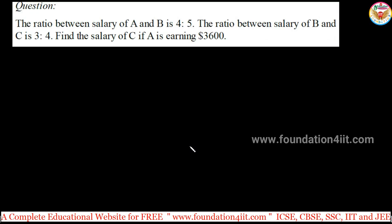You can see this question. Whenever they asked to find the ratio between, the ratio between salary of A and B is 4 is to 5. Ratio between the salary of B and C is 3 is to 4. Find the salary of C if A is earning $3,600. So, we need to know A, B, B, C we know, but we need to find out A is to C because relation between A and C is asked. So according to that method...